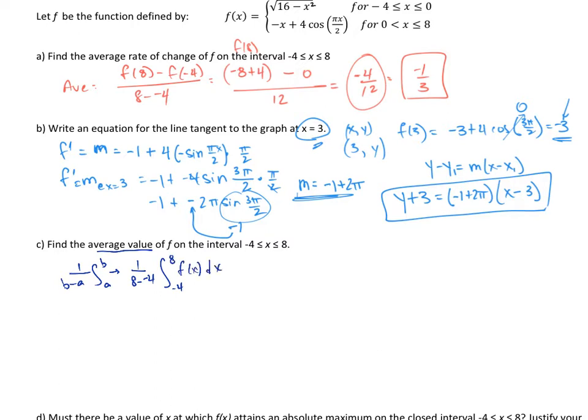Alright, but f of x is a piecewise function. It goes from negative 4 to 0, then 0 to 8. So I have to break this up. So my integral from negative 4 to 8, I'm going to need to break this up to be the integral from negative 4 to 0, and then 0 to 8 because of my piecewise function. Right here, that's the first piece, that's the second piece, integrate each separately.